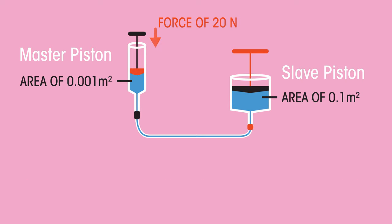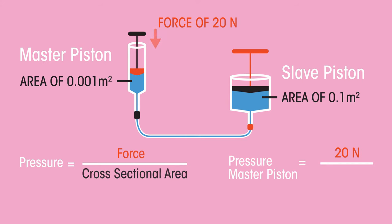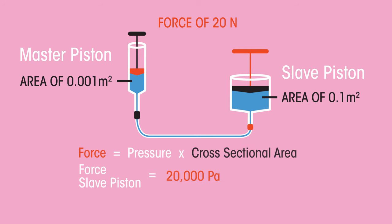First, we need to calculate the pressure produced by the master piston. So, 20 newtons divided by 0.001m² to give 20,000 pascals. Now we can calculate the force produced by the slave piston. So, 20,000 times 0.1m² to give 2,000 newtons.